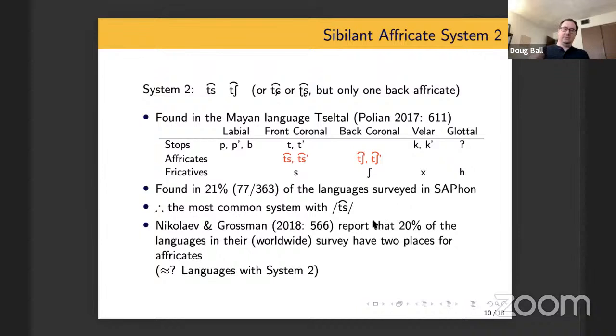Interestingly, there is this paper by Nikolayev and Grossman that looks at affricates worldwide. And they come up with an interesting, similar percentage for languages that have two places for affricates. So it's maybe possible that the percentage from SAPhon actually is reasonably close to what the worldwide distribution is of this particular system.